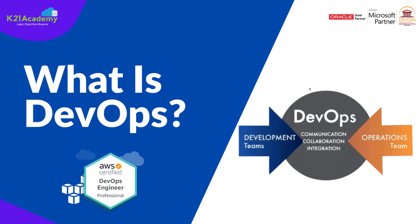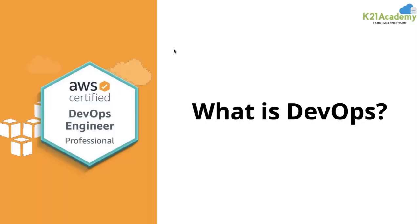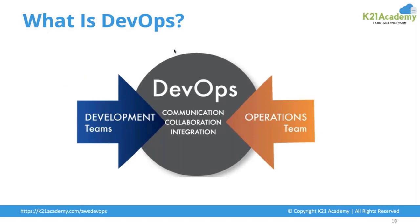Hello everyone, welcome back to another session by K21 Academy. Today our expert trainer will be discussing what exactly is DevOps. DevOps is a combination of a development team and an operations team coming together to form a DevOps team. A DevOps engineer — whether junior or senior — needs to have knowledge on both the development side and the operations side.